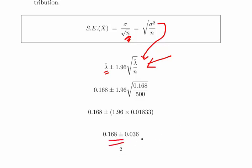You can take it a bit further and express it as 0.132 to 0.204, if you wish. You can express the upper and lower bounds explicitly.